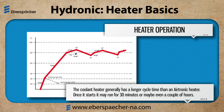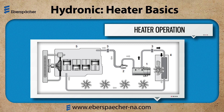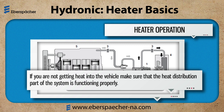The coolant heater generally has a longer cycle time than an Airtronic heater. Once it starts, it may run for 30 minutes or maybe even a couple hours. In a coolant system, the heat does not blast out as with the Airtronic heater. Space heating is provided by fan units — typically low amp draw — and it will take longer to reach the desired temperature inside the vehicle. It is important to understand the role of the coolant heater in a space heating application: the coolant heater heats coolant, and the rest of the system distributes the heat. If you are not getting heat into the vehicle, make sure that the heat distribution part of the system is functioning properly.